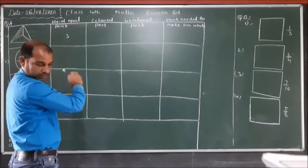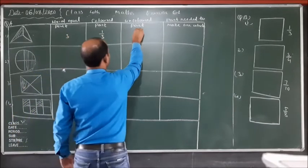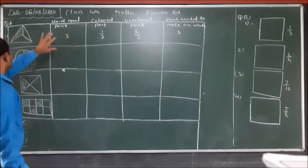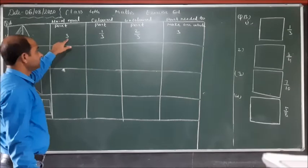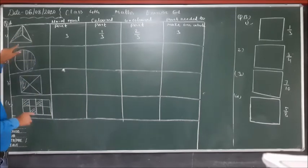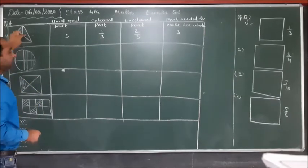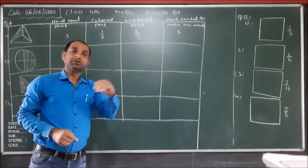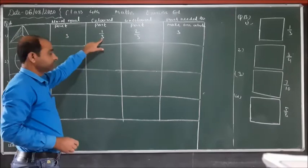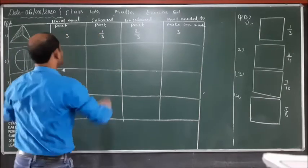The first shape can be written as one upon three. There are one, two, three total equal parts. One part is colored, so we write one upon three — the total number of parts is your denominator, so we write three in the denominator place. One part is colored, so we write one in the numerator. The fraction is one upon three.